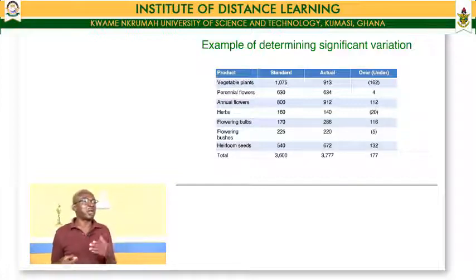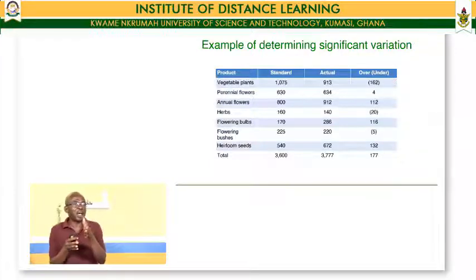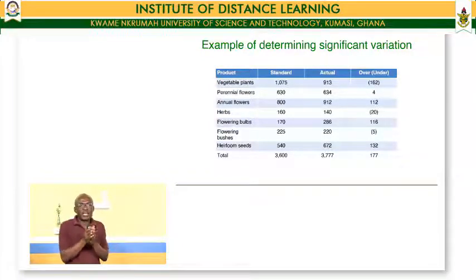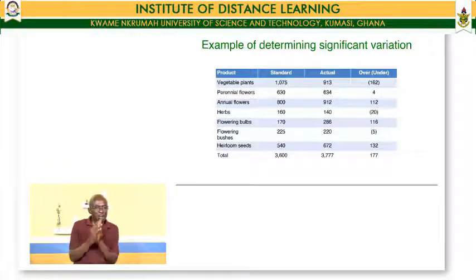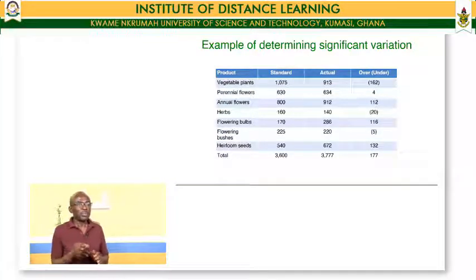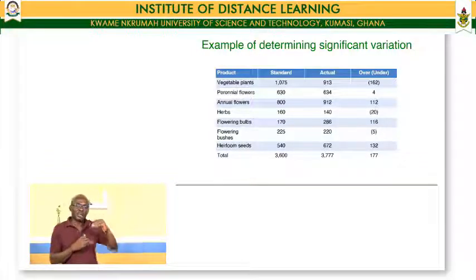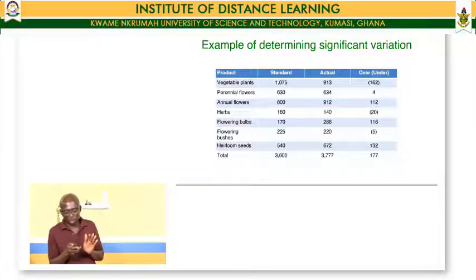For example, with vegetable plants, if the standard is 107 actual, the person did not quite achieve the acceptable standard, but depending on the degree of variance, it may be considered acceptable. For perennial flowers, if the standard is 630 and the actual was 6% above, the person has gone beyond what is accepted and can be rewarded. It all depends on the standards set, the upper limits, and the average the person can reach — if below the average, the person can be trained or disciplined depending on the situation.